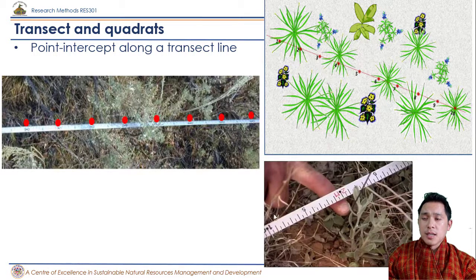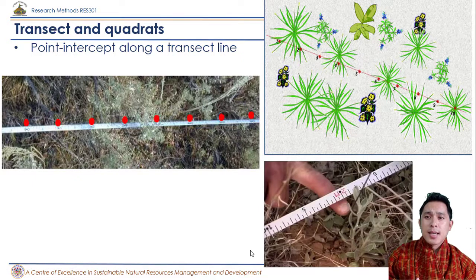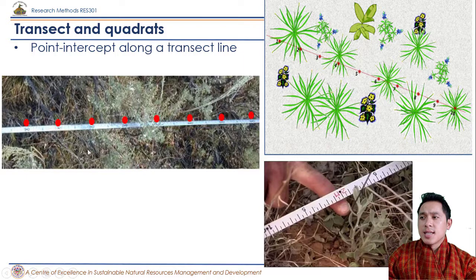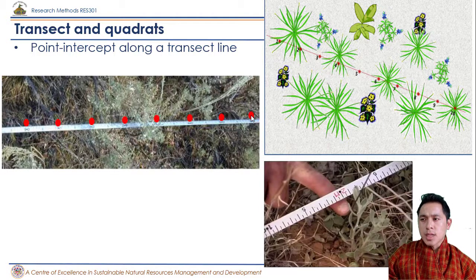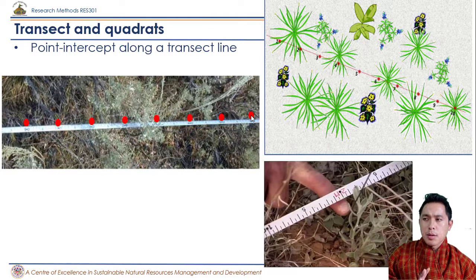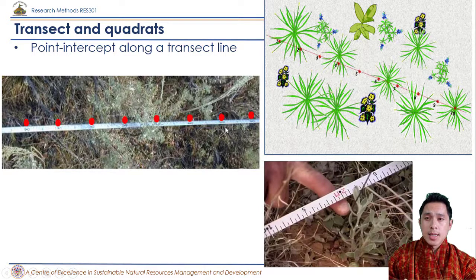Usually if the plant species are quite sparse, the points between two intervals are less, like 0.5 meter apart. So this is the transect we have chosen and this is basically a measuring tape. On the measuring tape, we are taking a 0.5 meter measurement. On every 0.5 meters we have points located there.